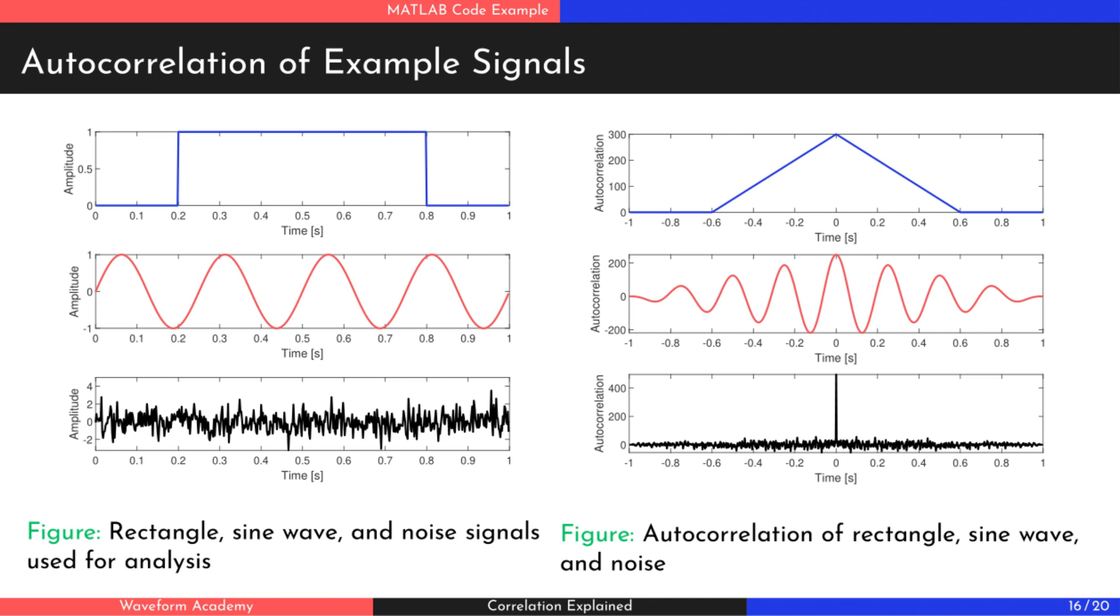As you can see, the autocorrelation of the rectangle forms a triangle. For the sinusoid, it results in a cosine wave with the same frequency, but a fading amplitude.